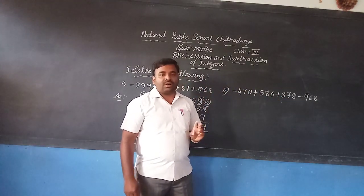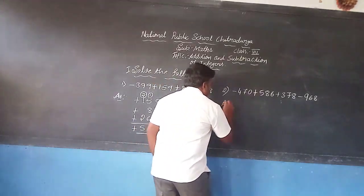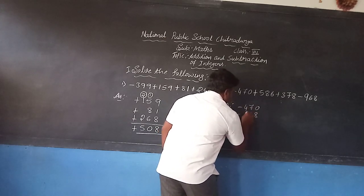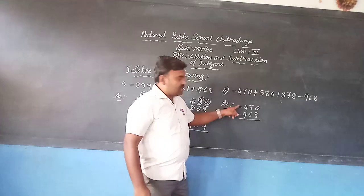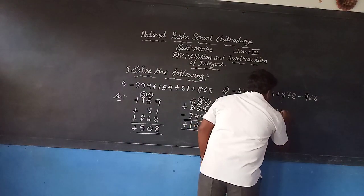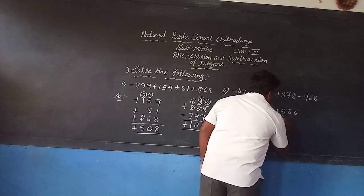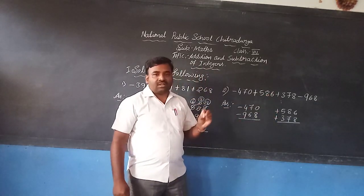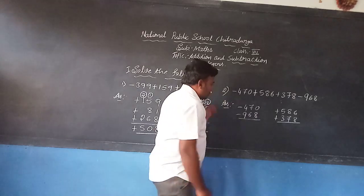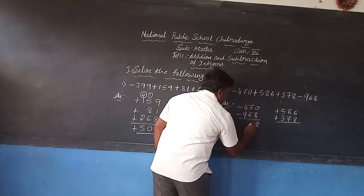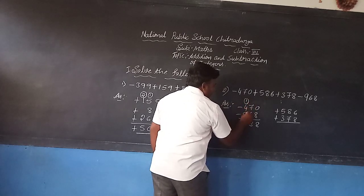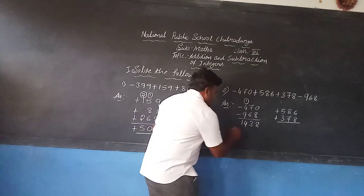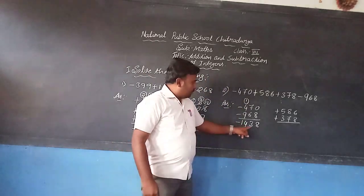So first we should find the sum of the same-sign integers. Minus 470 and minus 968 — these two integers are in the same sign. We find their sum: 0 plus 8 is 8, 7 plus 6 is 13 — carry 1, 4 plus 9 is 13, plus 1 carry is 14. After finding the sum, attach the same sign — so minus 1438.